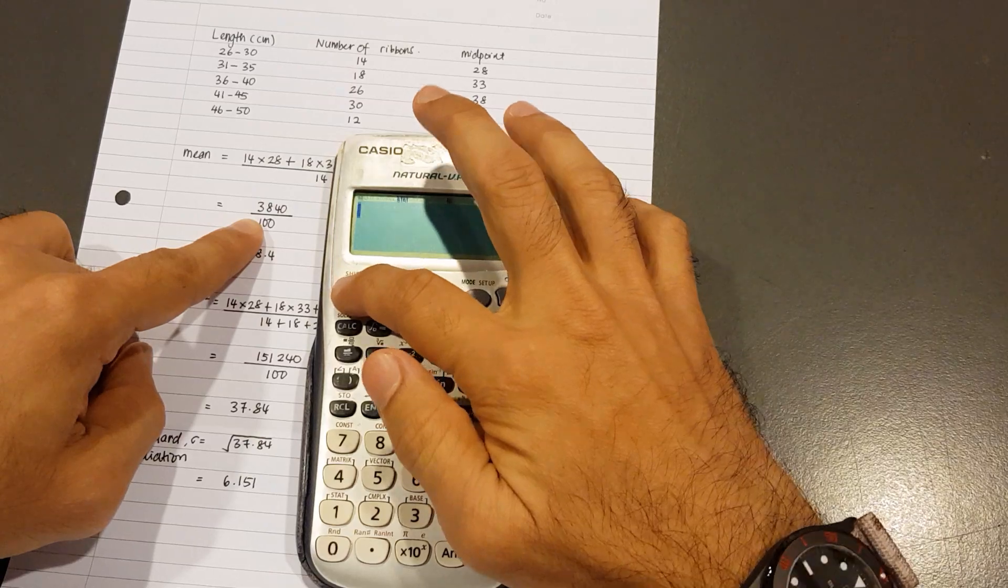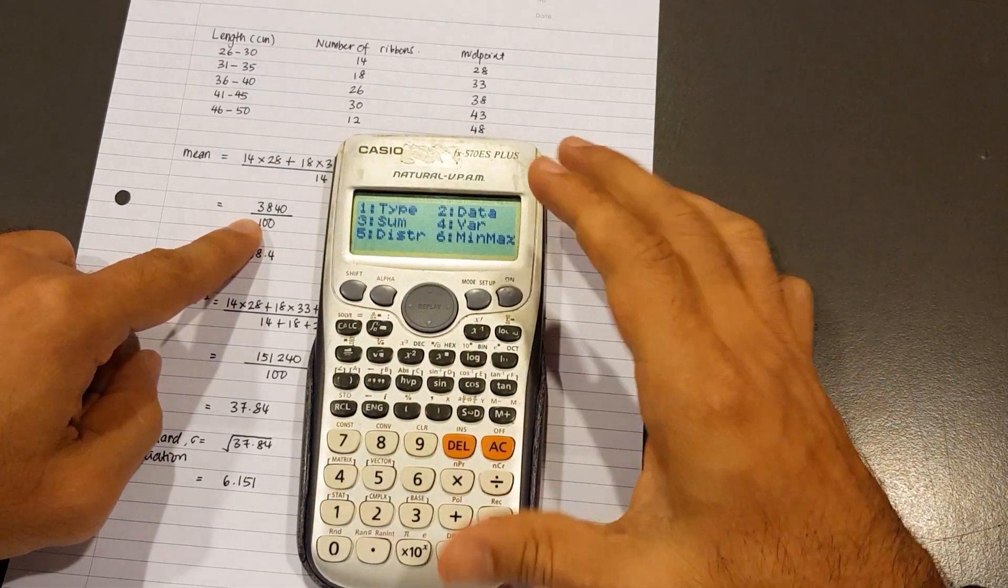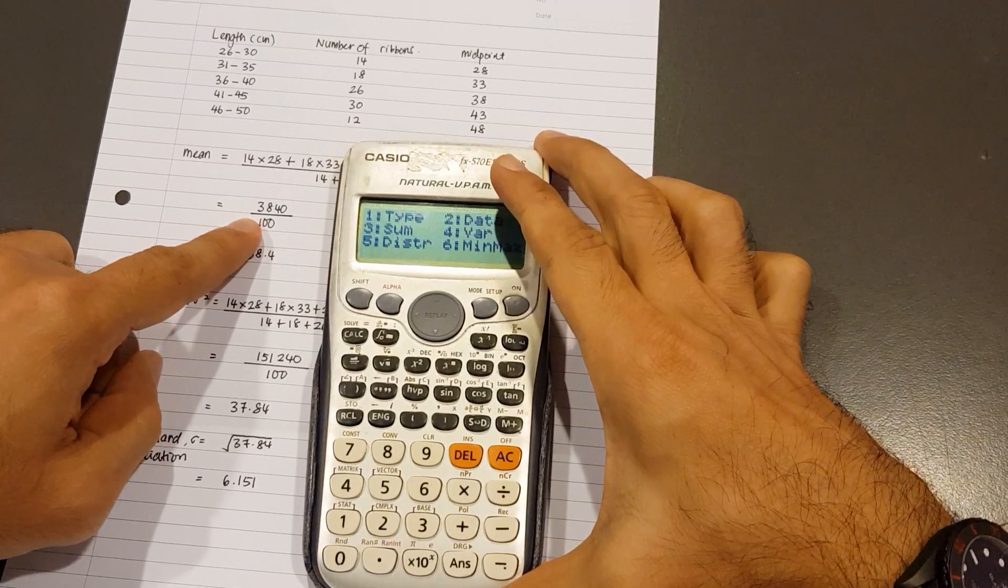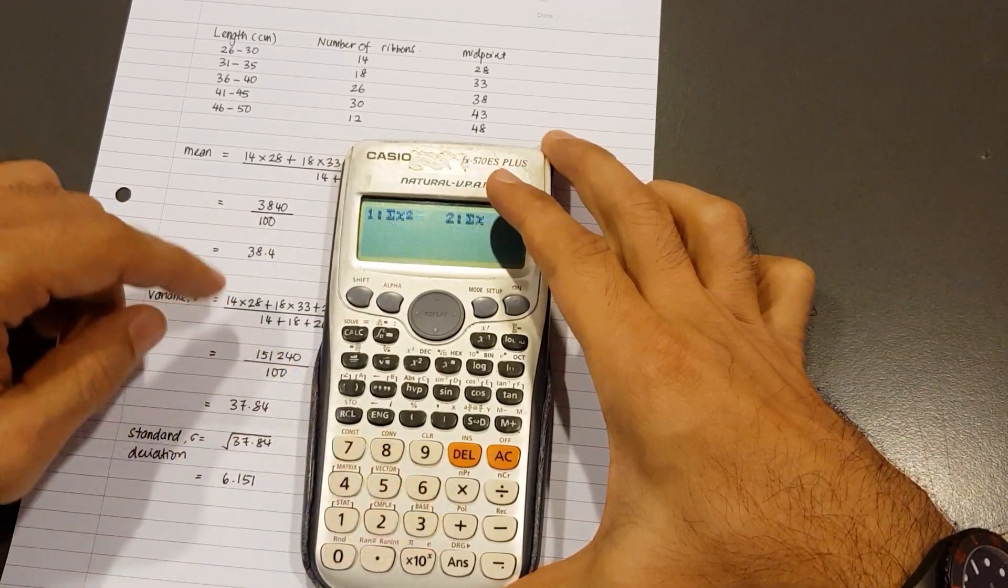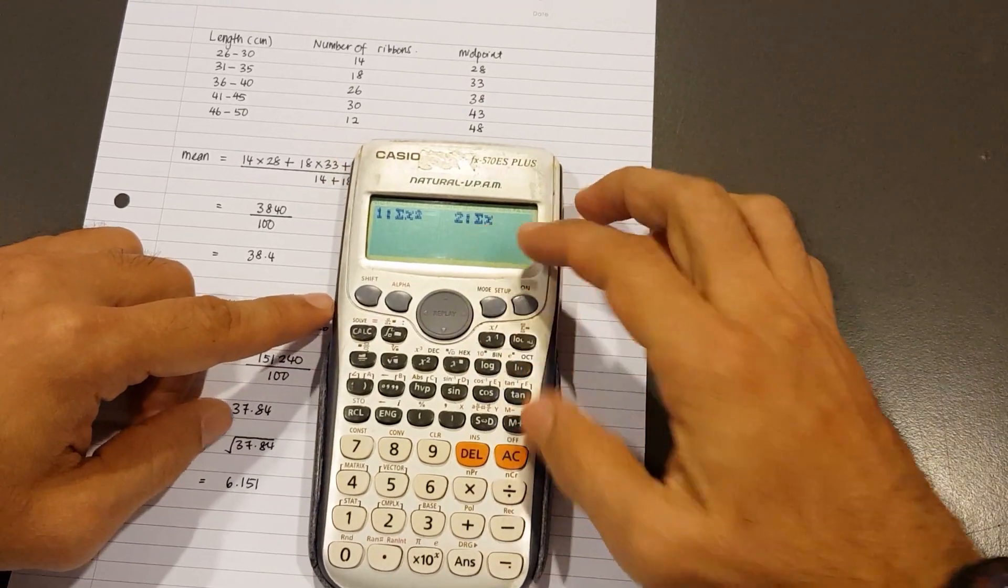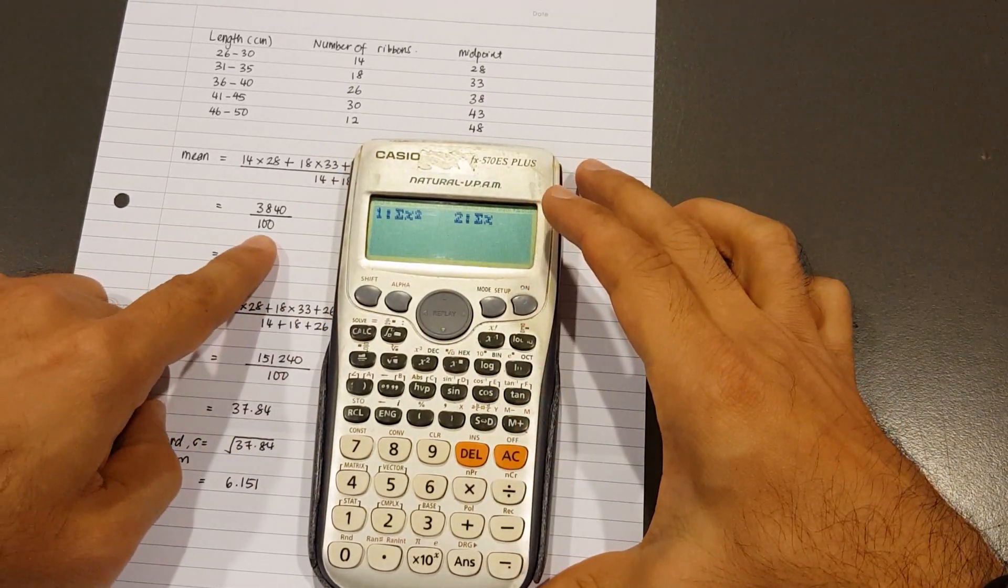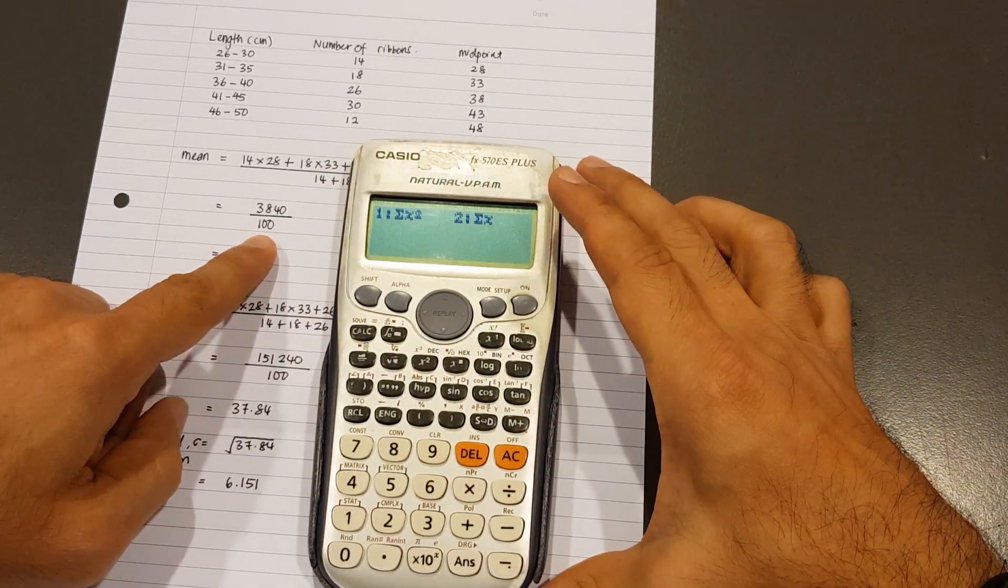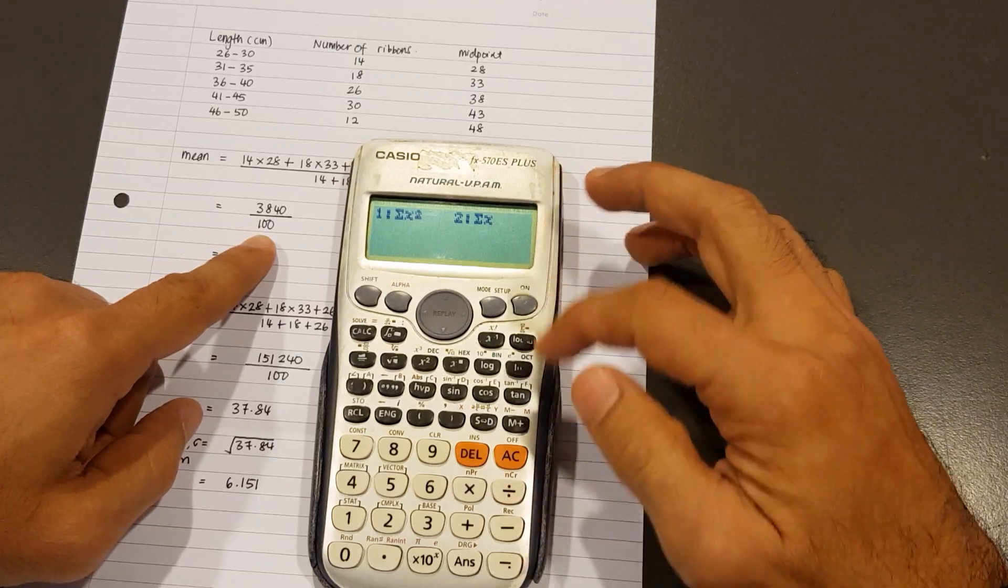If I go back to Shift 1, and if I key number 3 again, there is no option here to obtain the total frequency, which is 100. There's no option here.